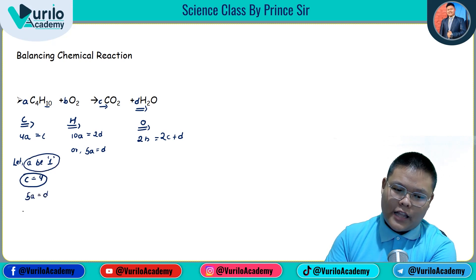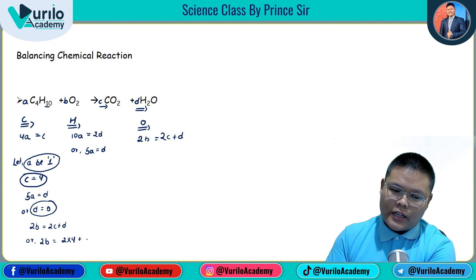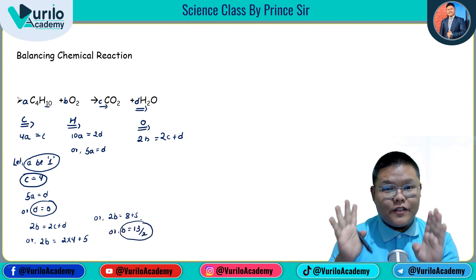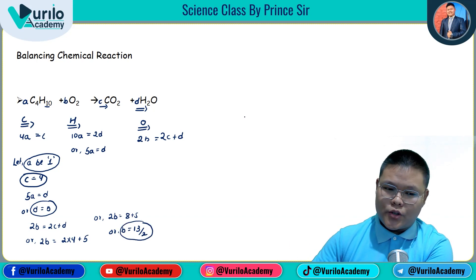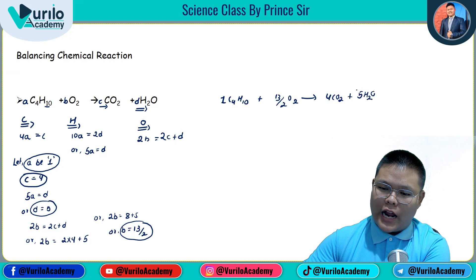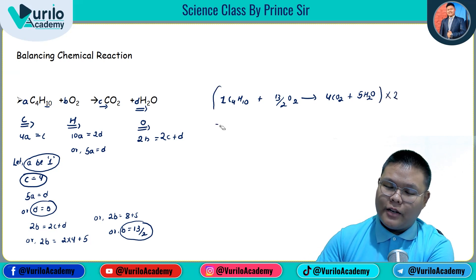5a is equal to d. d is equal to 5. Our equation is 2b is equal to 2c plus d. So: 2 into 1 - our 2c, we keep 4; d we keep 5. So solving: 2b is equal to 4 plus 5, that is 13, so b is equal to 13 divided by 2. That is how we find the values of a, b, c, d. Simply substitute these values. a is 1, so C4S10; b is 13/2, so 13/2 O2; c gives 4CO2; d is 5, so 5 S2O. Since we have 13 divided by 2, we multiply through by 2 to clear the fraction.